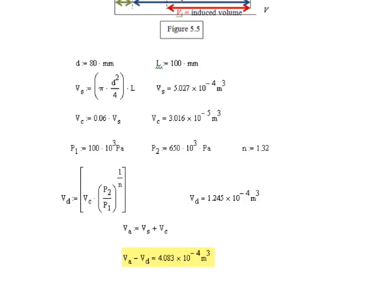If we now look at the polytropic rule where Vd is our final volume and we know the pressures P₂ and P₁ and the clearance volume, we get a value of Vd = 1.245 × 10⁻⁴ m³. This allows us to calculate Va, which is the swept volume plus the clearance volume.